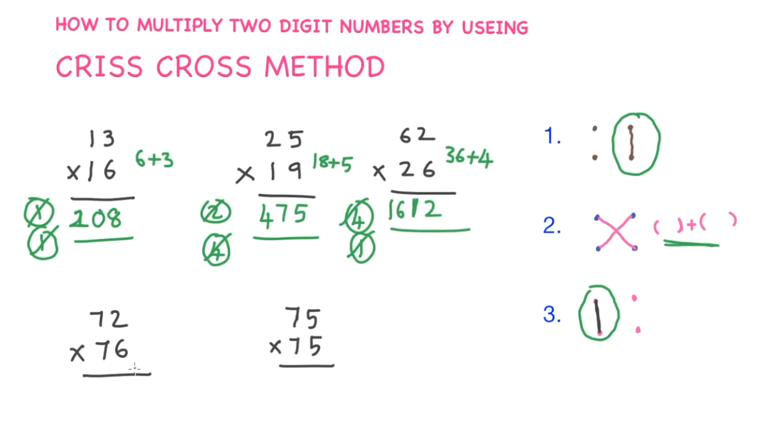72 × 76. Step 1. Multiply these two elements. 6 twos are 12. Keep 1 aside. Cross-element. 7 sixes are 42. Plus 7 twos are 14. So, what you will get? It is 56. 56 plus 1, 56 plus 1 is 57.